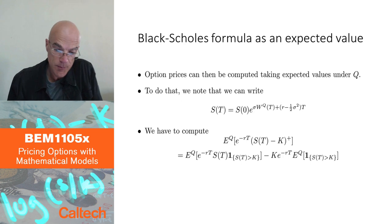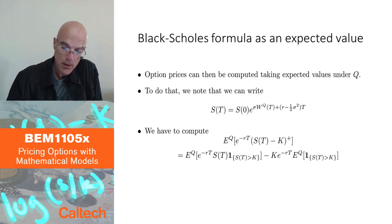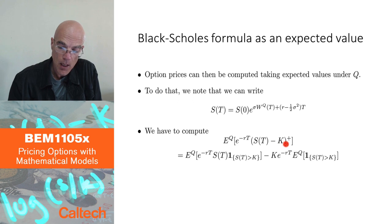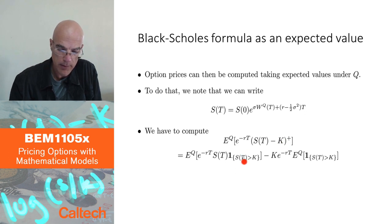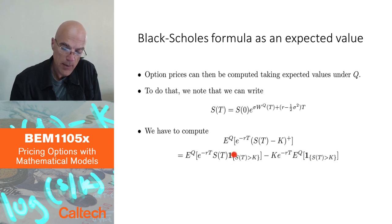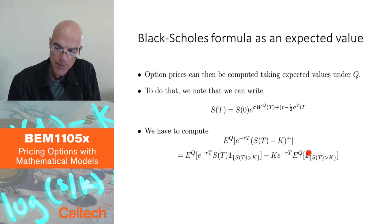Going back to the call option. I need to compute this expectation. The discounting factor is deterministic so it won't matter much. I'm going to split it into two parts. The subscript plus means I'm looking at the maximum of S(T) minus K and 0. That's going to be different from 0 only when at the end the option is in the money, meaning when S(T) is larger than K. So I'm going to compute these expectations only on the outcomes where S(T) is bigger than K. I multiply by this indicator random variable 1_{S(T) > K} here and here.